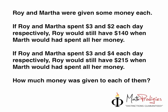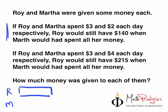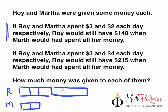The starting is actually pretty standard. So Roy is here, Martha is here. This is for the first case. So if Roy and Martha spent $3 and $2 — remember, this question is about ratio and proportion. Roy spent 3 units, Martha spent 2 units. And Roy would still have $140 left, so just put $140 here.